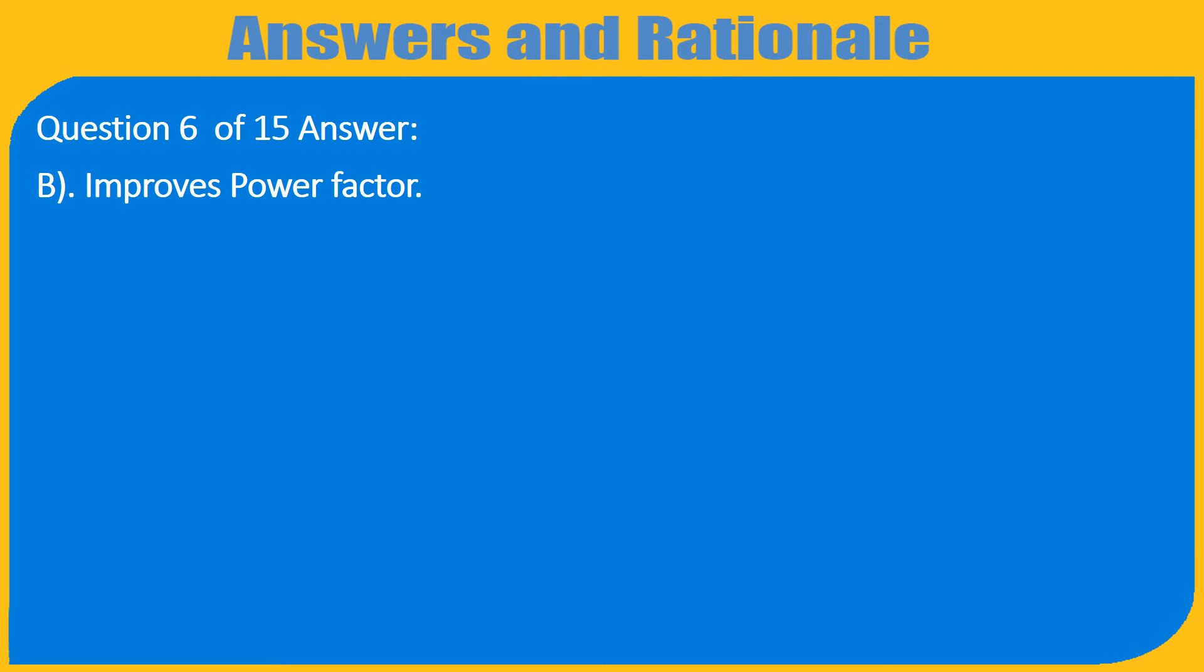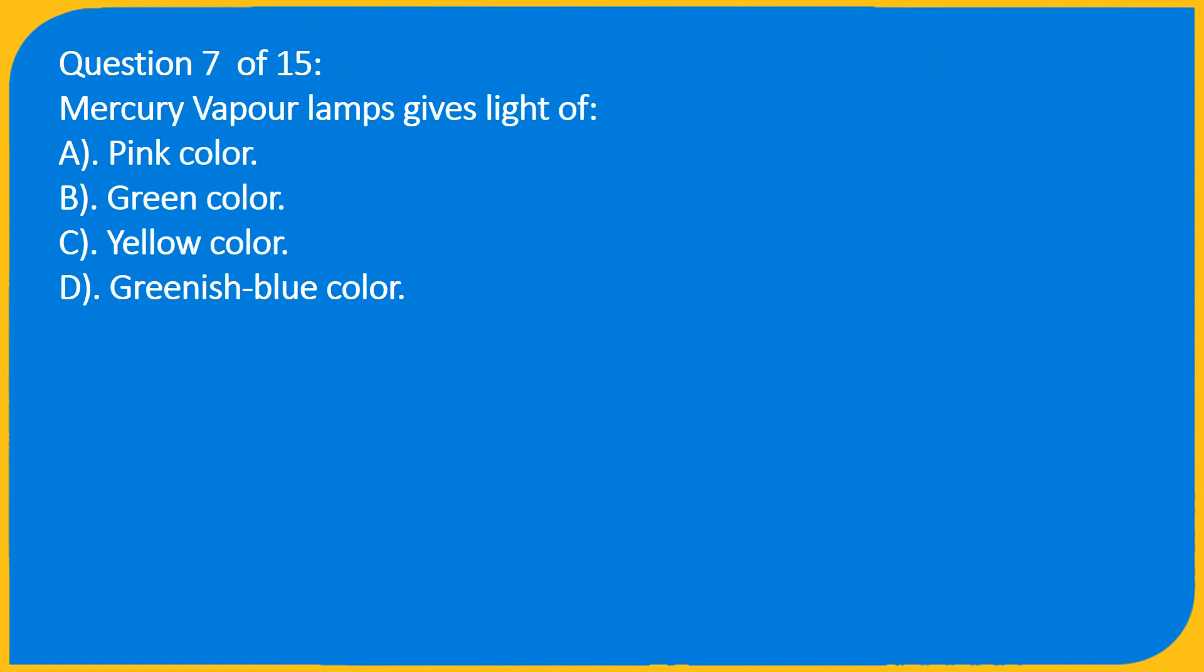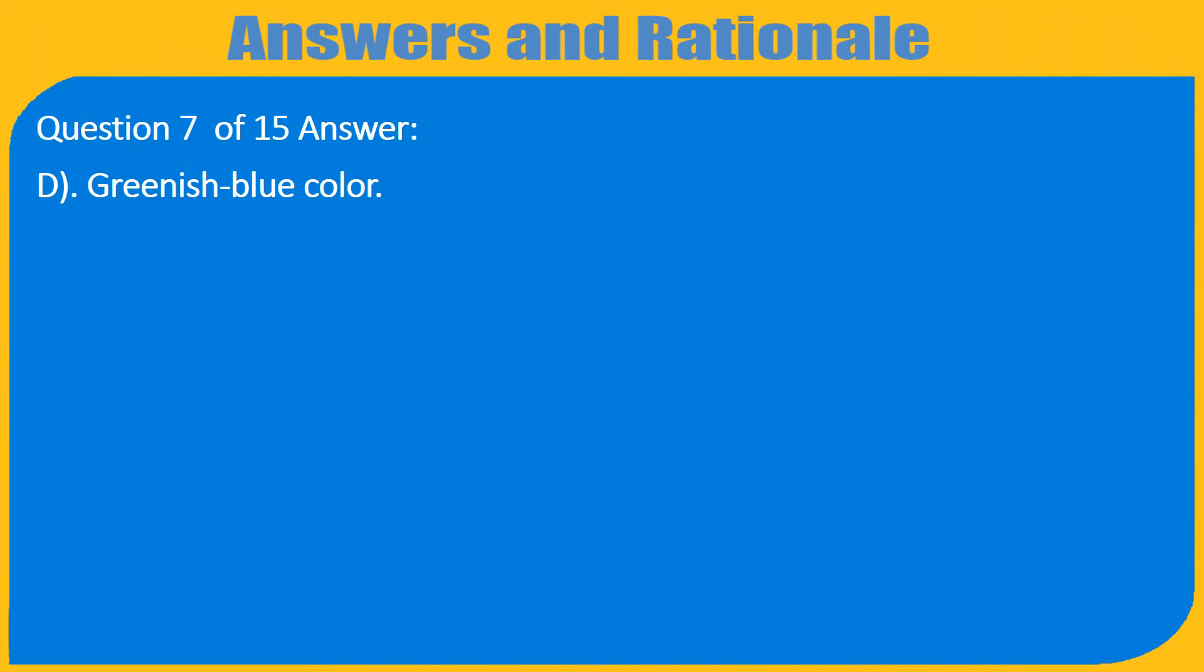Question 7 of 15: Mercury vapor lamps gives light of A. Pink color, B. Green color, C. Yellow color, D. Greenish blue color. Answer: D. Greenish blue color.